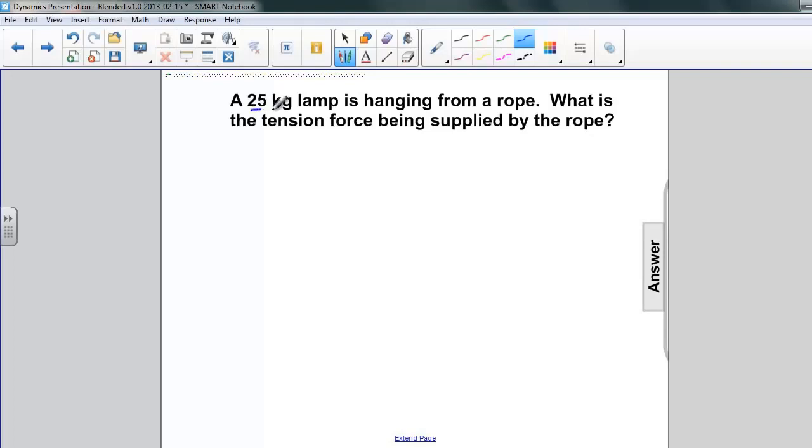We have a little bit of information here. One, we're given that the mass is equal to 25 kilograms. It's hanging from a rope. That means it's not moving and it's certainly not accelerating. So we have that the acceleration is zero. And now we're being asked to find the tension force on the rope.